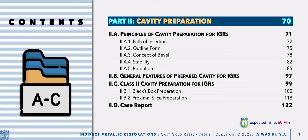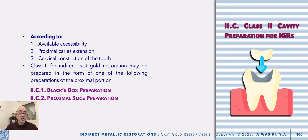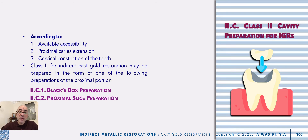Now, in this episode, we will discuss in detail how to prepare class 2 compound or complex for cast gold restoration or indirect gold restoration. In general, according to the available accessibility, how far posterior you are in the oral cavity, and according to the proximal carious extension and cervical anatomical construction of the tooth, class 2 compound or complex for indirect restoration especially for gold